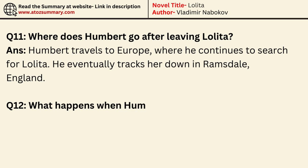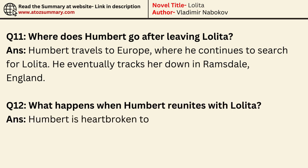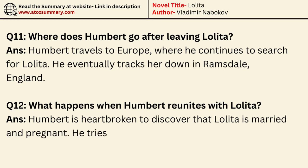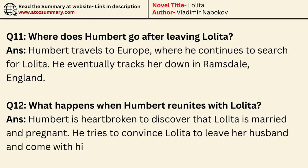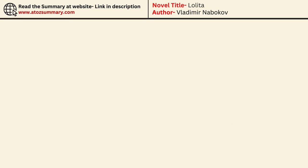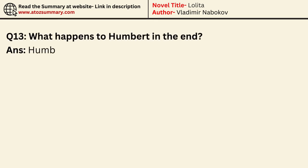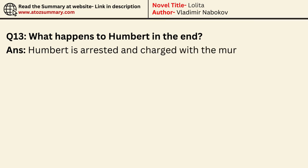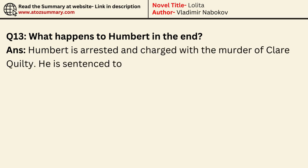What happens when Humbert reunites with Lolita? Humbert is heartbroken to discover that Lolita is married and pregnant. He tries to convince Lolita to leave her husband and come with him, but she refuses. What happens to Humbert in the end? Humbert is arrested and charged with the murder of Claire Quilty and is sentenced to life in prison.